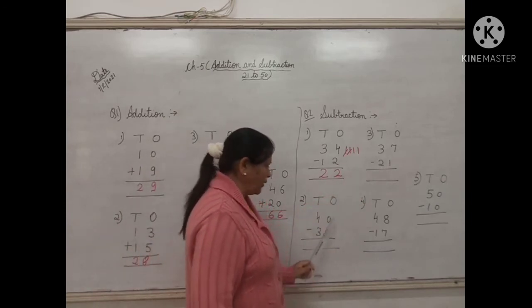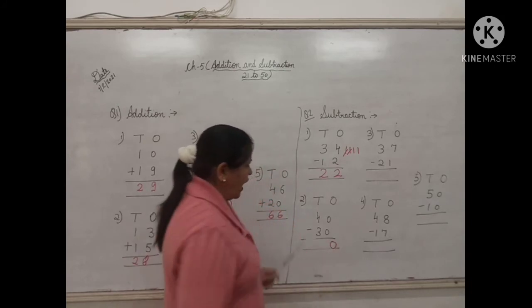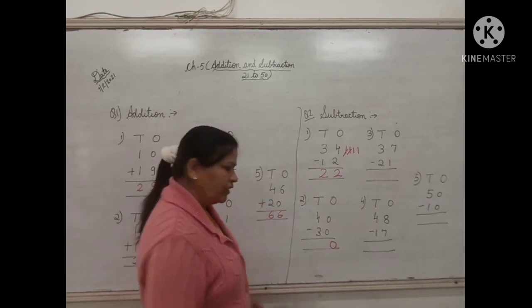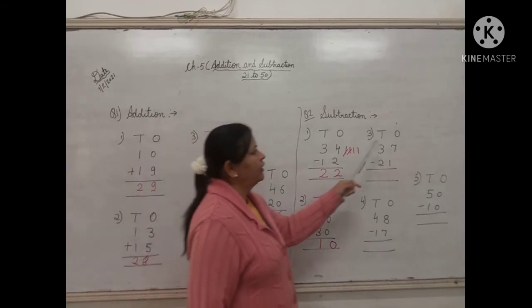Now the second one. 0 minus 0 will be 0. And 4 minus 3 will be 1. So the answer will be 10.